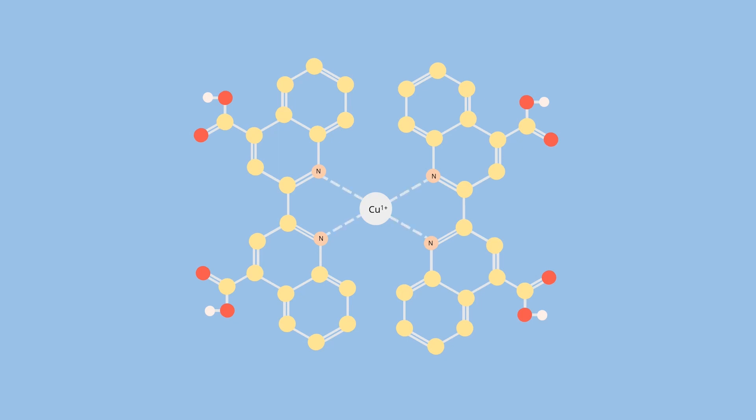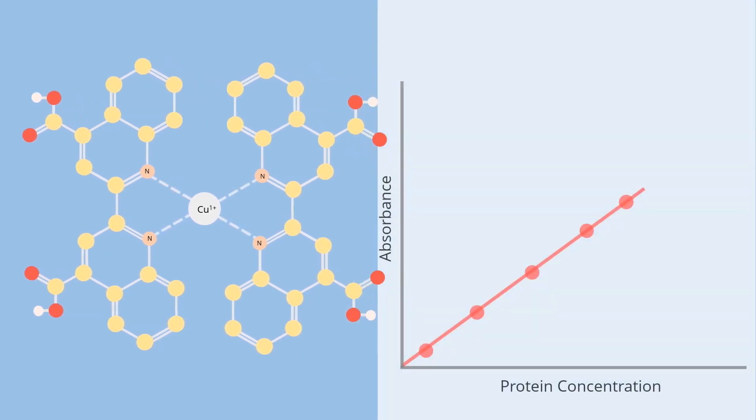Other methods replace the folin phenol reagent with reagents such as bicinchoninic acid, which produces a more stable copper complex and can measure a wider range of protein concentrations.